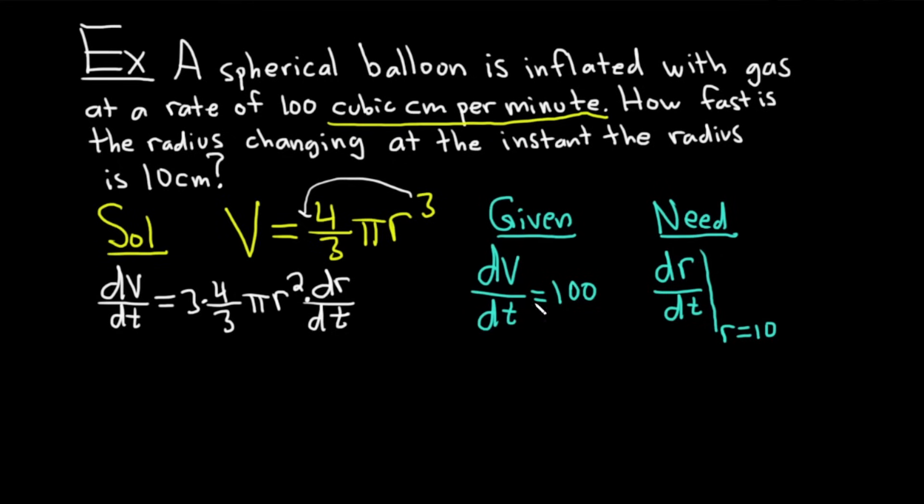Now we can plug in what we know. We know dV/dt is 100. 100 is equal to. The 3's cancel. So we have 4π r² dr/dt. And since we're looking for dr/dt, we can just divide both sides by 4π r². So divide by 4π r². Divide by 4π r².